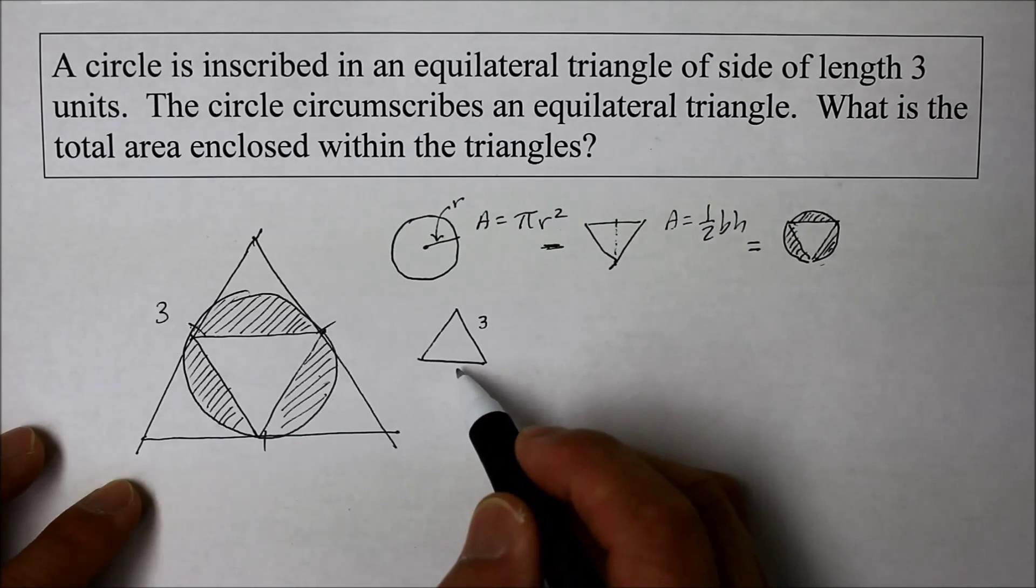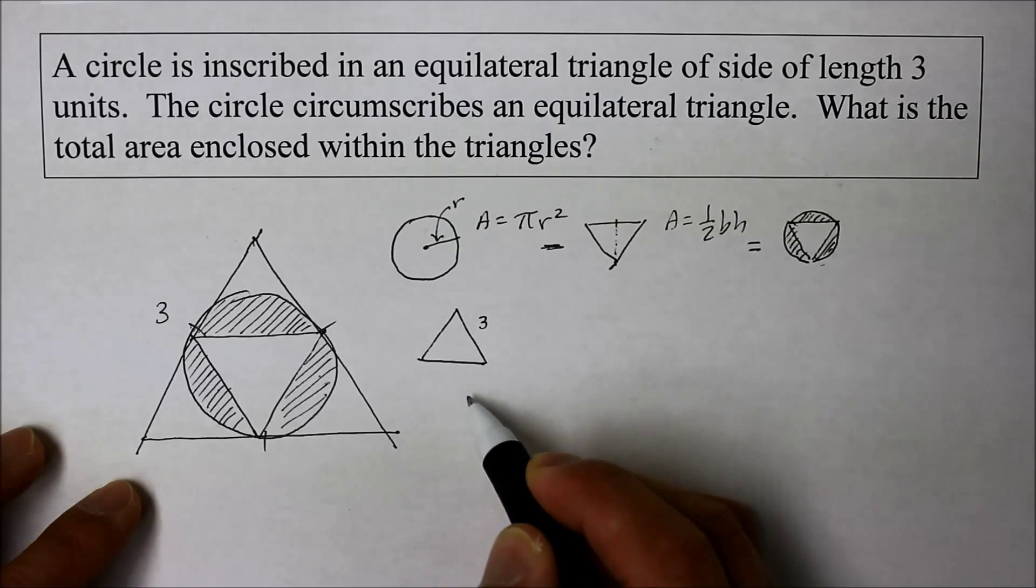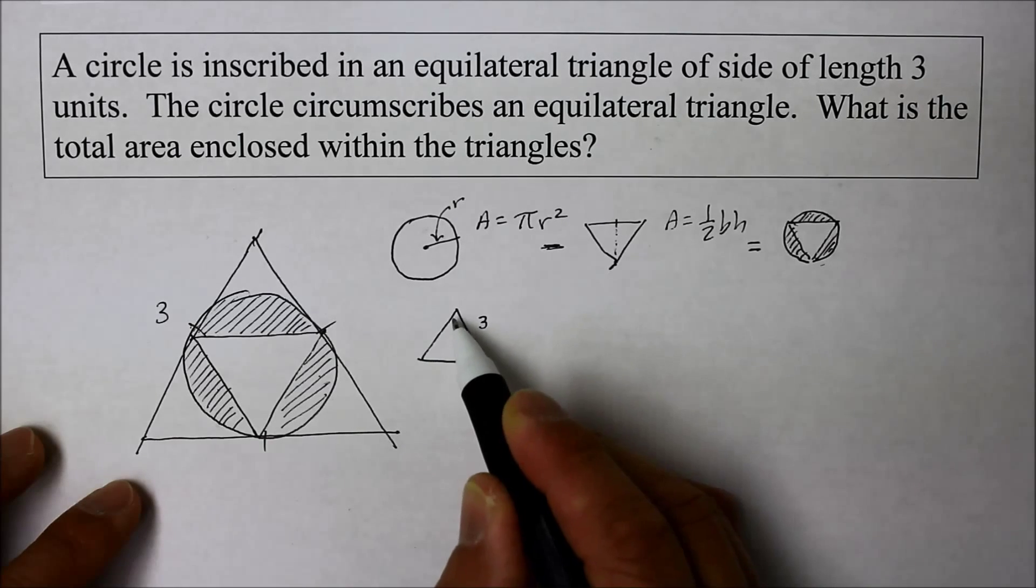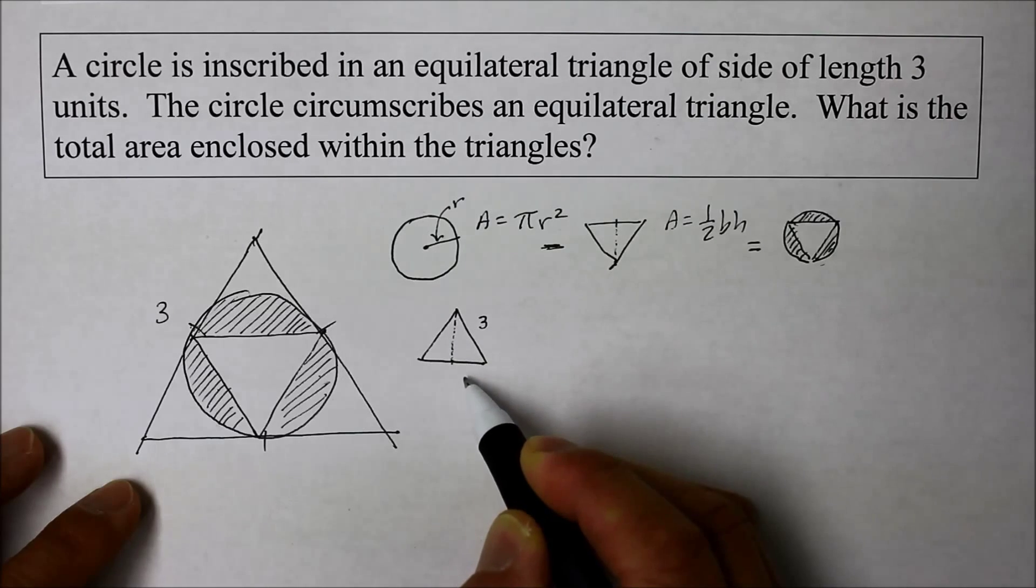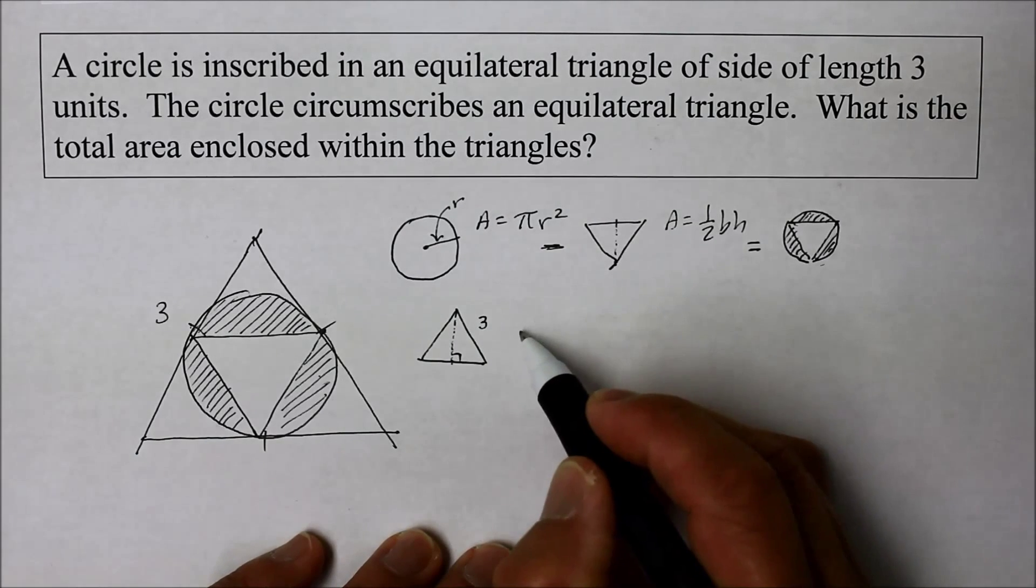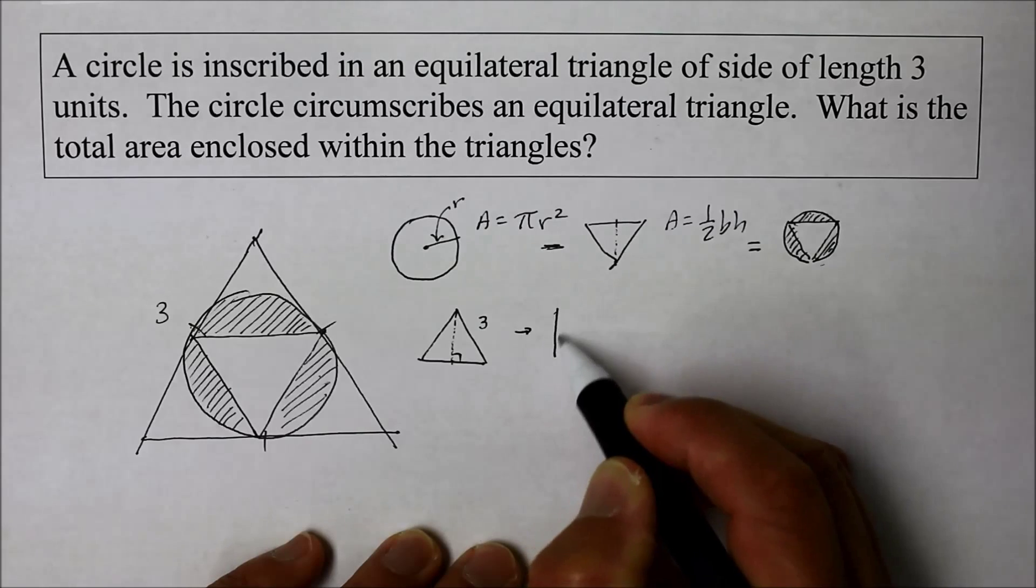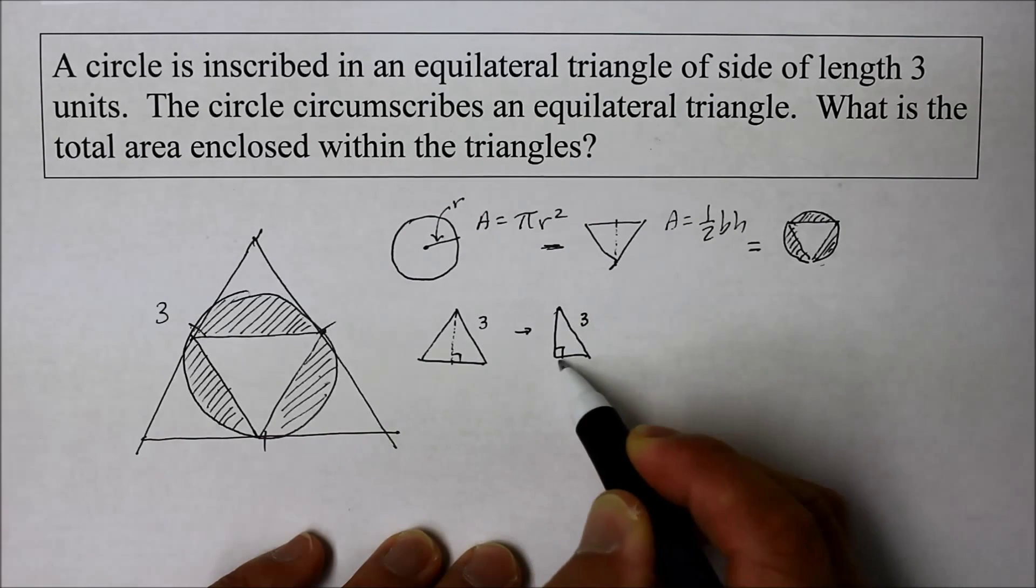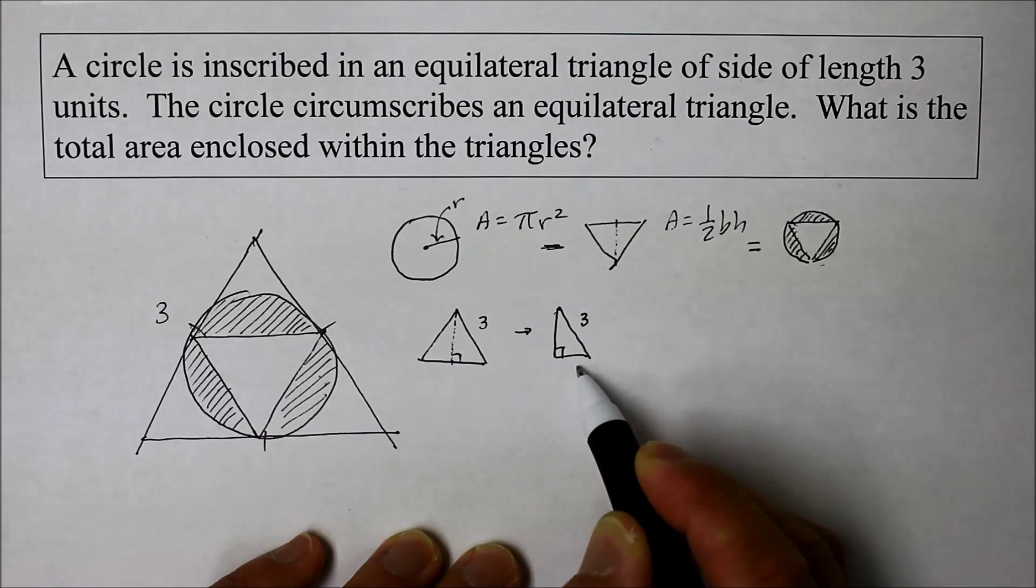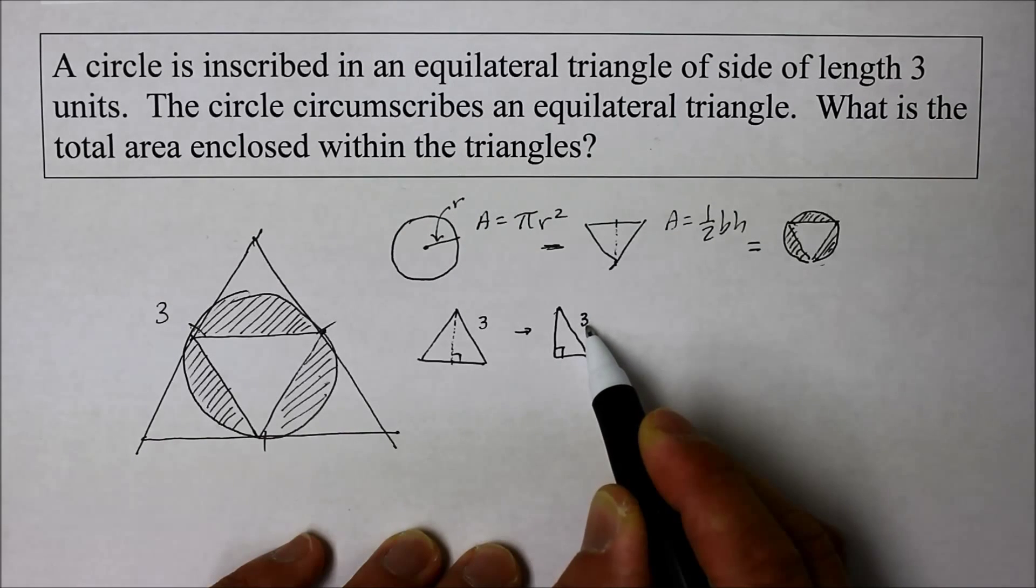That means if you were to draw an altitude, and in this case, it will be the median, which will go to the midpoint, we will have a right triangle. And in that case, that right triangle becomes, the three side becomes the hypotenuse, the longest part of the right triangle. The base is half of the three. Can you see that?